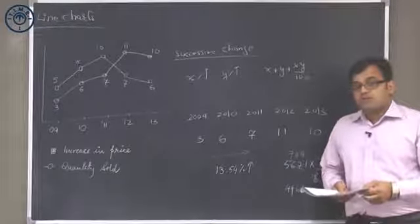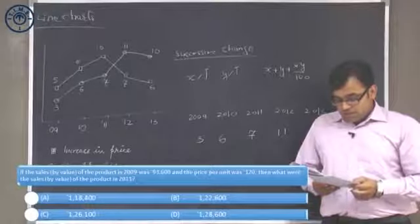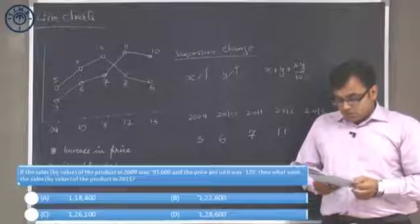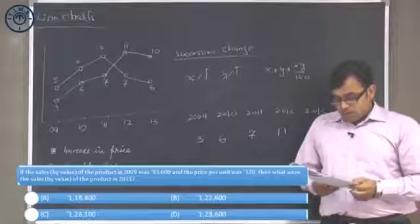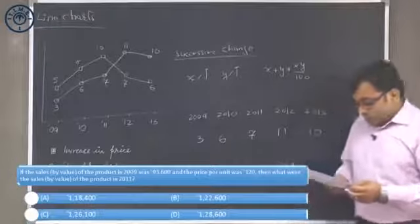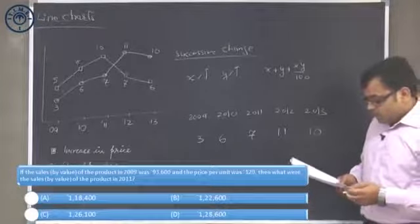If the sales by value of the product in 2009 was 93,600 and the price per unit was 120, then what was the sales by value of the product in 2011? In 2009, the sales by value is given as 93,600. From here, it is increasing, we have to go to 2011.